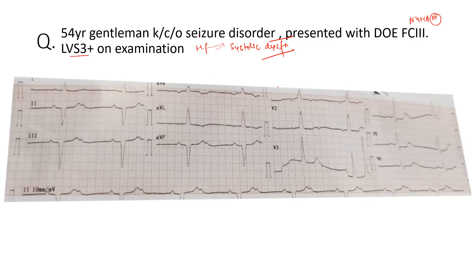This is the admission ECG. We make sure that the technical details are fine — standardization is normal. It's a sinus rhythm. The P wave is negative in AVR, positive in aVR. This is probably because of a bundle branch block that is there. But P being negative is fairly good — it's a normal sinus rhythm.